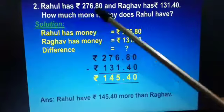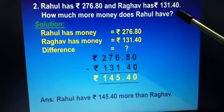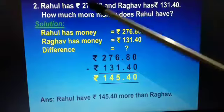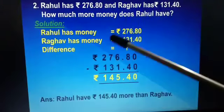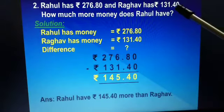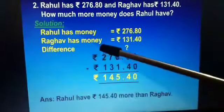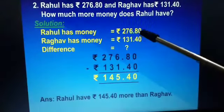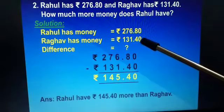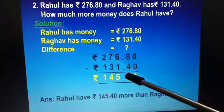The next question: Rahul has rupees 276 and 80 paise, and Raghav has rupees 131 and 40 paise. How much more money does Rahul have? Rahul has rupees 276 and 80 paise, and Raghav has rupees 131 and 40 paise. We have to find out the difference, so we will subtract rupees 131 and 40 paise from rupees 276 and 80 paise.